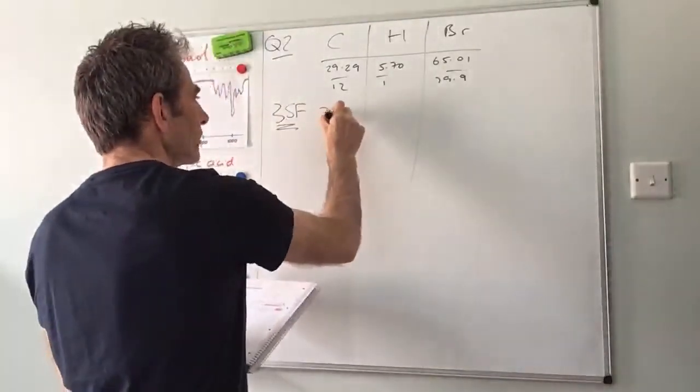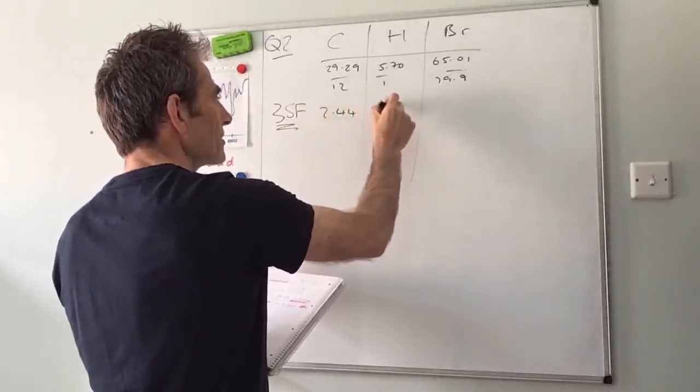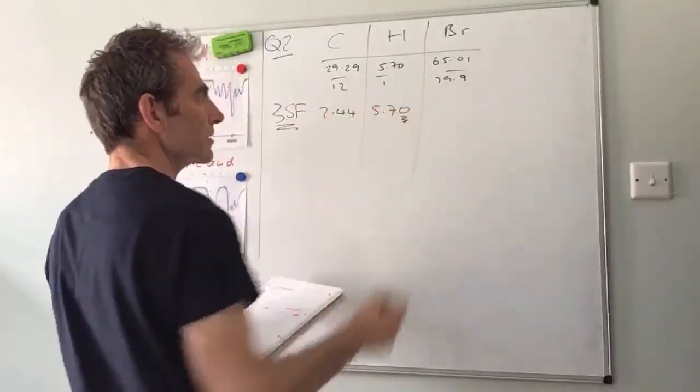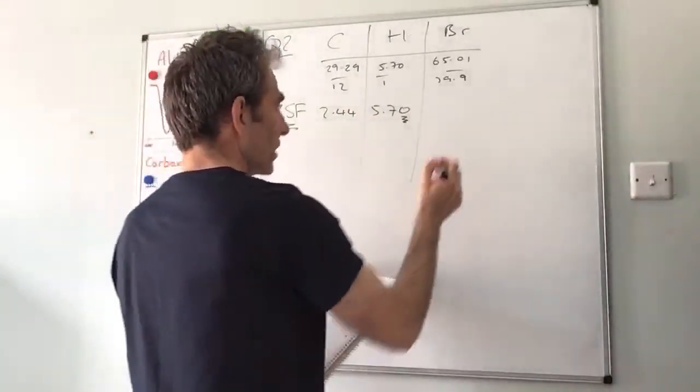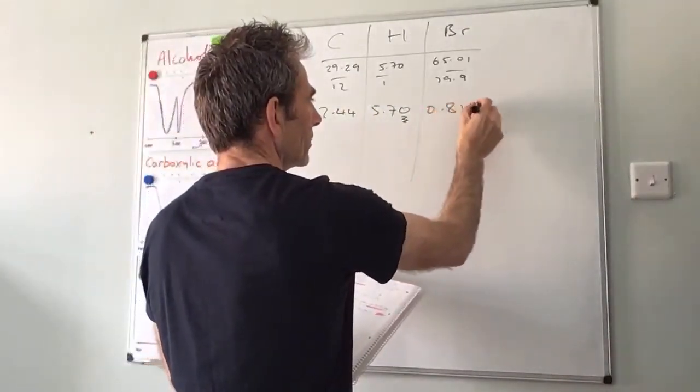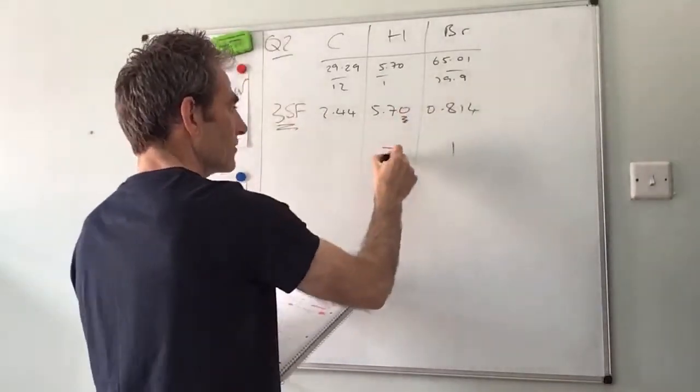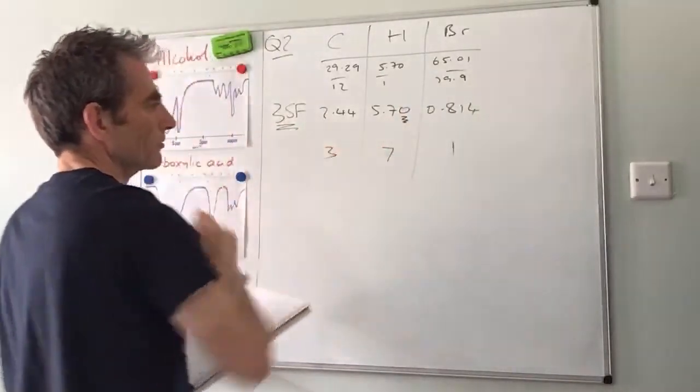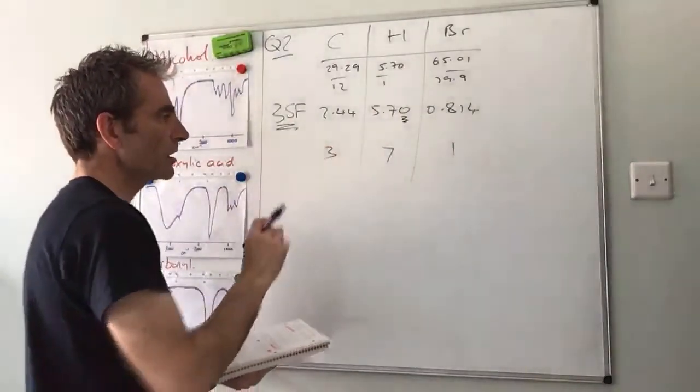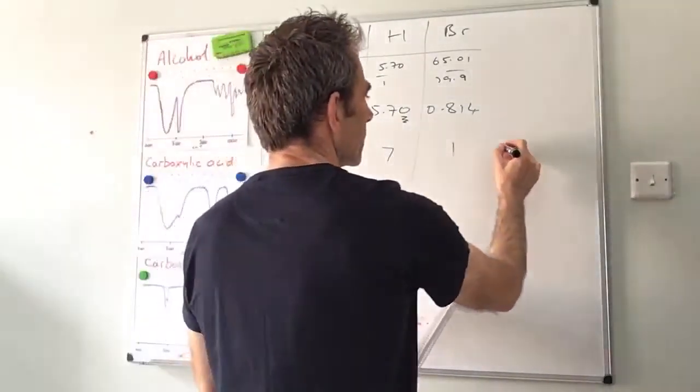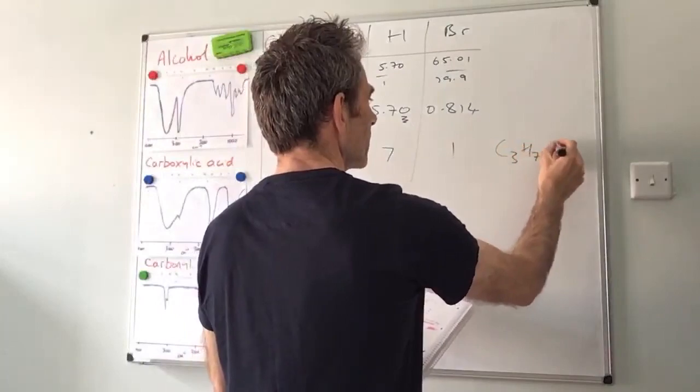So 2.44, 5.70 - that zero is really important - and 0.814. Divide by the smallest which is obviously that one, so that gives you a one, that gives you a seven, that gives you a three. So the empirical formula is C3H7Br.